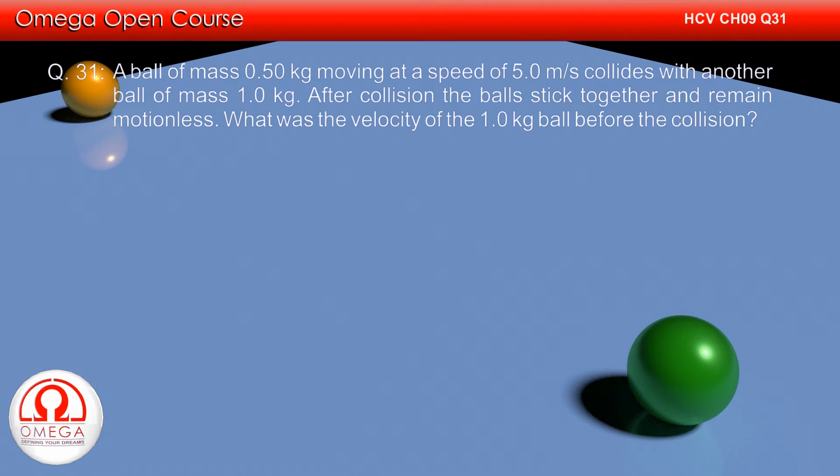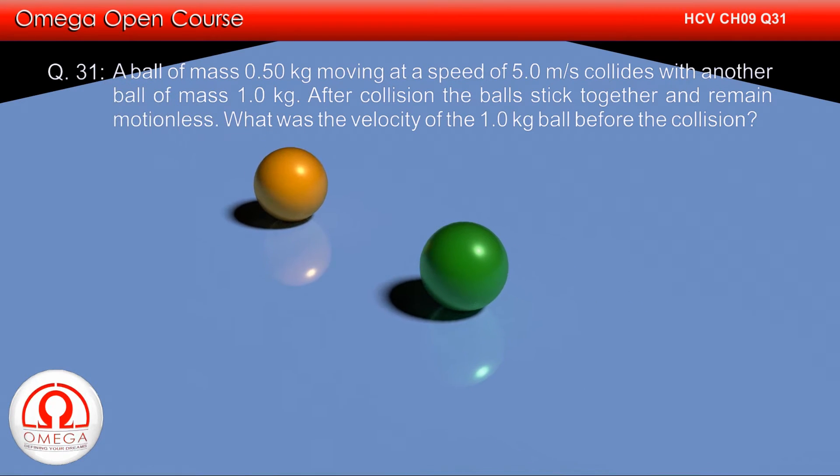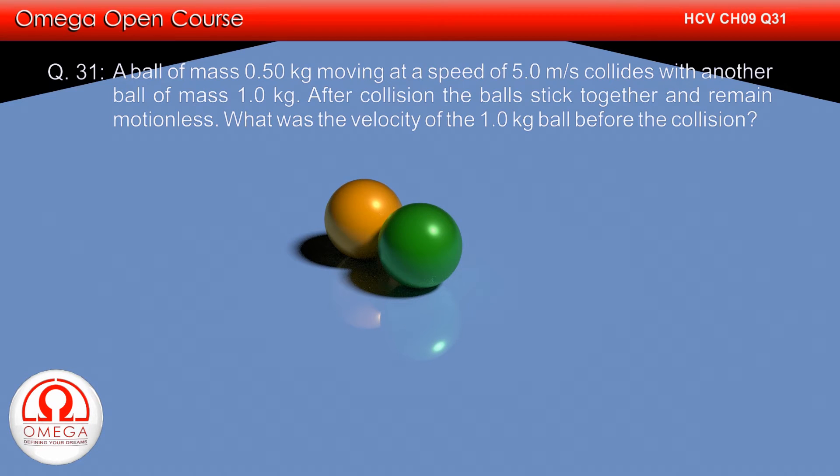A ball of mass 0.5 kg moving at a speed of 5 meters per second collides with another ball of mass 1 kg. After collision, the balls stick together and remain motionless. What was the velocity of the 1 kg ball before the collision?